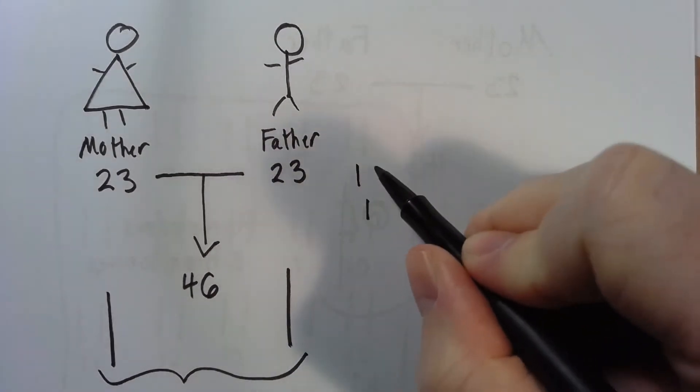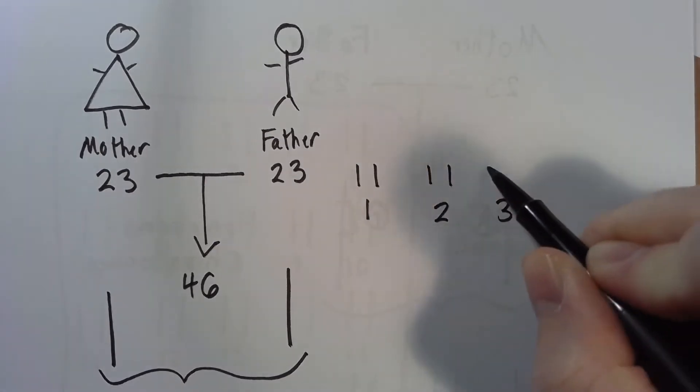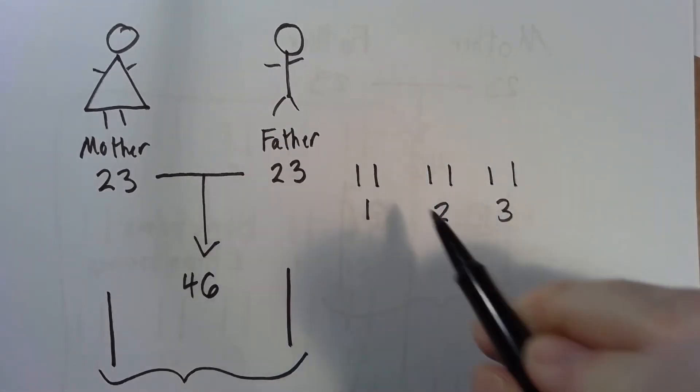One, there's one from mom, one from dad. Two, one from mother, one from your father. Three, one from mother, one from father. These are homologous chromosomes.